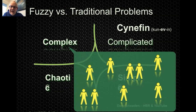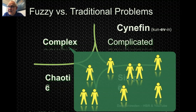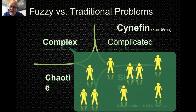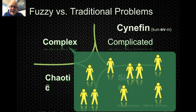The problem with complex is there's no one who can tell you the answer — there are no experts, only people trying things out. There's not even a real role for a manager because the manager doesn't know either. It's all about experimentation and trying things out, which requires a very different organization structure and process.